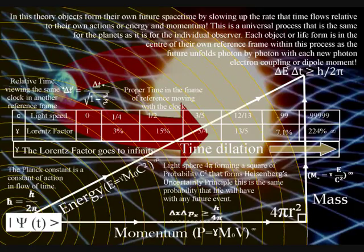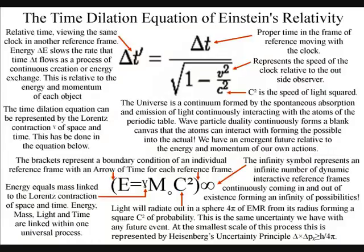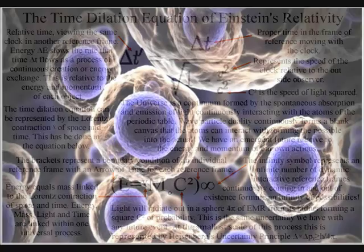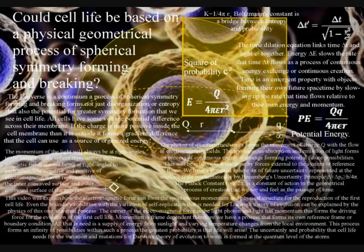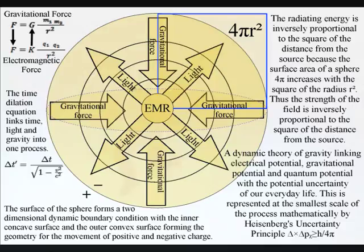Energy slows the rate that time flows creating a future relative to the energy and momentum of each object, therefore forming the curvature of space-time. In this theory this is a universal process. Everything from the smallest creature to the largest planet forms its own future space-time by slowing up the rate that time flows. Objects just freefall towards the greatest energy because it has the greatest time dilation or the slowest rate that time flows.